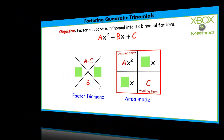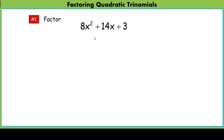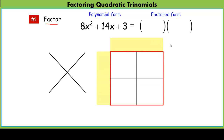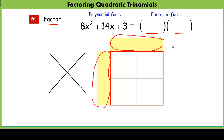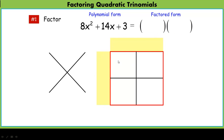Let's try a problem. Write down the quadratic trinomial 8x² + 14x + 3. Factoring means going from polynomial form to factored form. We'll use the Xbox method — the factor diamond and the area model — working backward to find the two binomial factors. First, fill out what we know: the leading term 8x² and the trailing term 3 go into the area model.